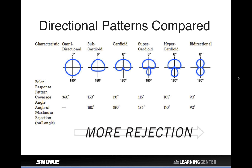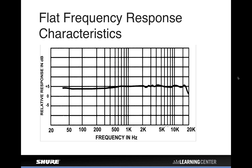Some microphones even have switchable pickup patterns — a nice feature. Now let's move into frequency response, which is basically how the microphone sounds. On a frequency response chart, the horizontal axis covers the range humans can hear: 20 Hz to 20,000 Hz. The vertical axis shows the measured output level at those different frequencies. A flat frequency response means the output is mostly the same at any given frequency — very natural, wide-ranging, not coloring the sound.